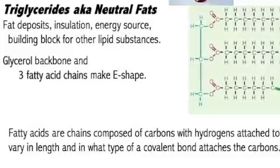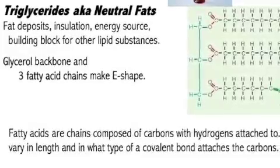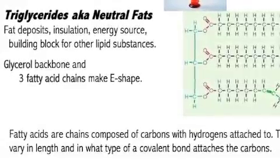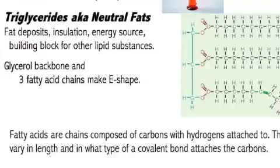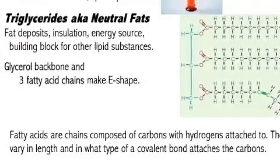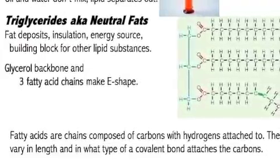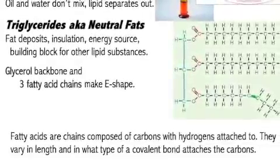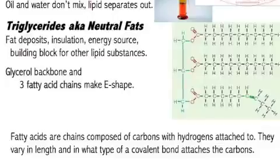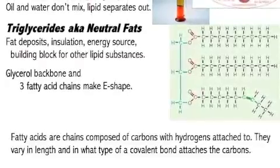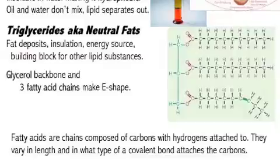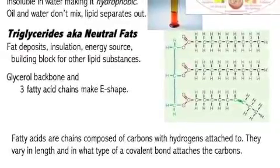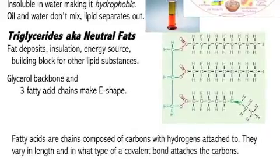Fatty acids are chains of carbons with hydrogens attached to them. They vary in length and in the type of covalent bonds the carbons use to attach to one another — either mostly single bonds or some double bonds. Single bonds are nice and straight and make saturated fats. Double bonds make kinks or bends in the chain, creating unsaturated fats or oils.